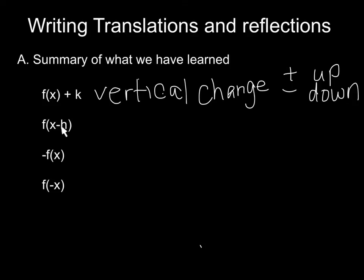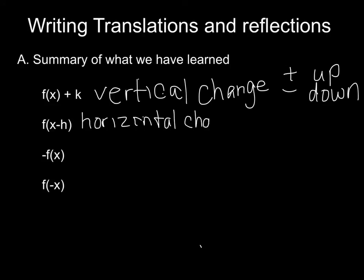What happens when you take a function and subtract a number on the inside? It makes it go to the right. And if you add a number on the inside, it goes to the left — the opposite of what you might expect, because of the minus h. So that's a horizontal change: adding inside goes left, subtracting inside goes right.